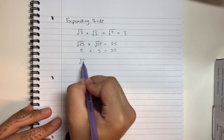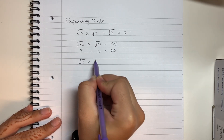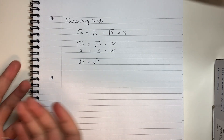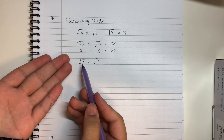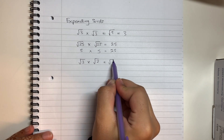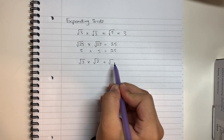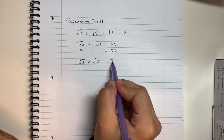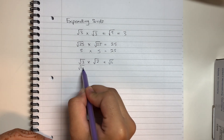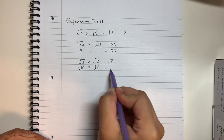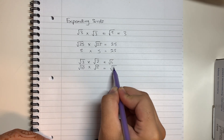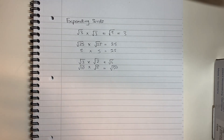If I had root 3 multiplied by root 2, when I have different roots I can multiply them out. So root 3 multiplied by root 2 simplifies to give me root 6. Root 10 multiplied by root 5 can simplify to give me root 50, and so on.